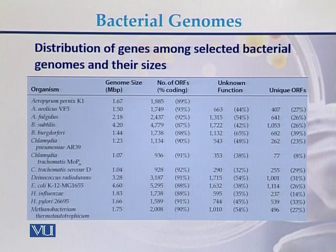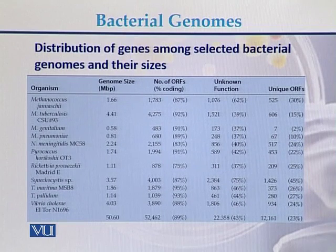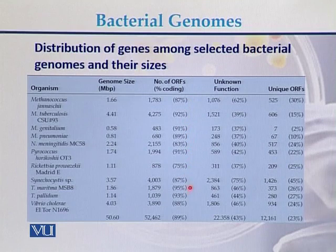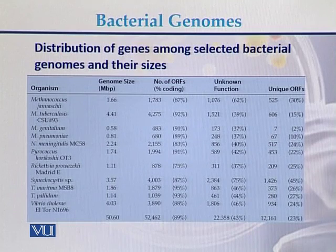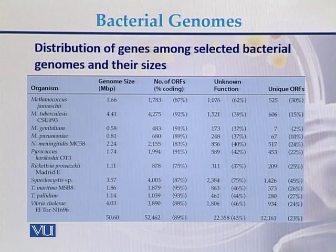In prokaryotes, there is very little DNA sequence that is not coding in nature. Another example of the distribution of genes among selected bacterial genomes shows that the coding DNA sequence ranges from 87% up to a maximum of 95%, then 89%. This illustrates the size of the genomes, the number of genes, and the percentage of the genome coding for specific RNA genes or polypeptide-producing genes.